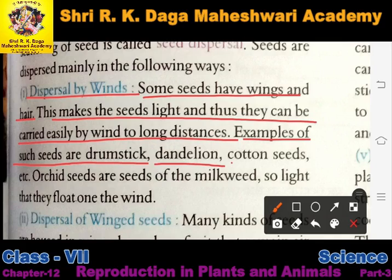Examples of such seeds are drumstick, dandelion, and cotton seeds. Ye saare is tarike ke seeds ke examples hain.